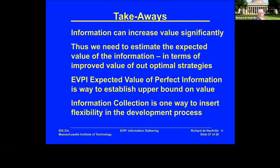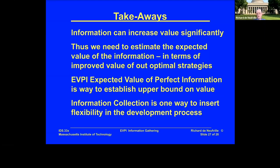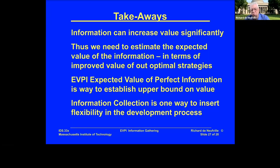The overall takeaway is that information can significantly increase the value of a project. You need to estimate the expected value of that information in terms of the improved value of your optimal strategies. The expected value of perfect information (EVPI) establishes an upper bound on this, and it's attractive because it's very simple to calculate — it tells you whether you're in the right ballpark and whether the proposal passes the giggle test. Ultimately, information collection is one way to begin inserting flexibility into a system design and development process.